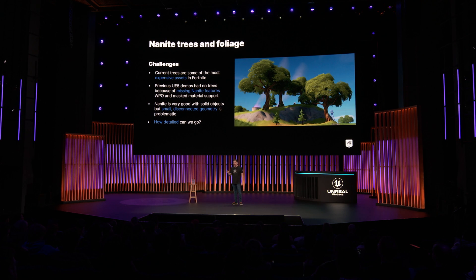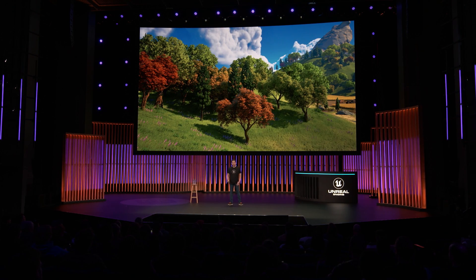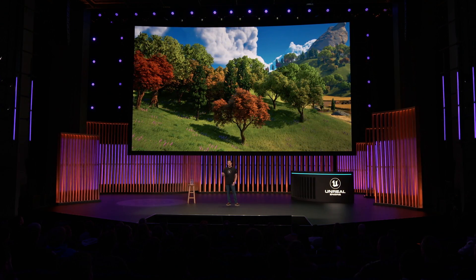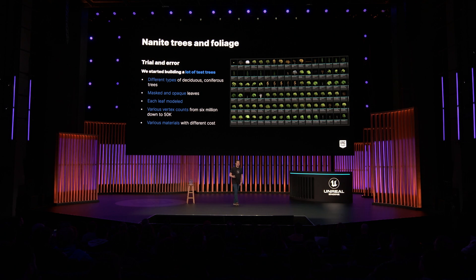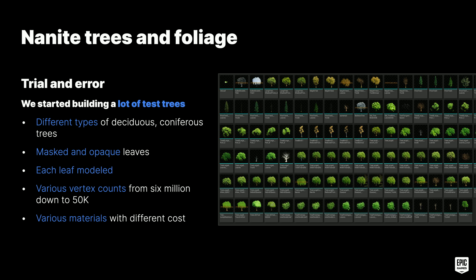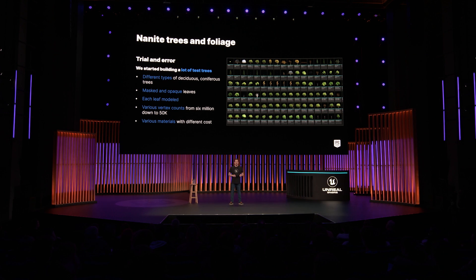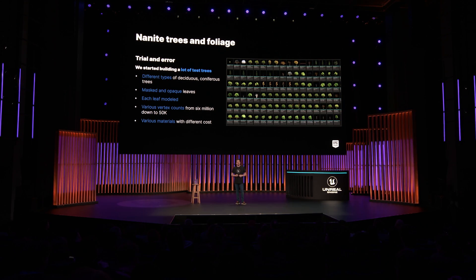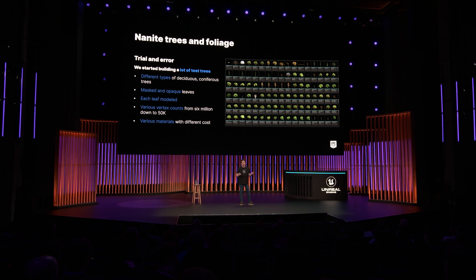We wanted to go from our old trees to something like our prototype map. We started about one year before shipping Chapter 4 and used a trial and error approach. We built lots and lots of trees — different types, but mostly focused on a single broadleaf tree. It was more important to have many variations of the same tree that we could easily compare. We built every variation we could think of, from masked leaves to opaque leaves, each leaf modeled as cards with masks, with various detail levels from 6 million vertices down to 50,000, and various materials with different costs.